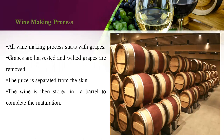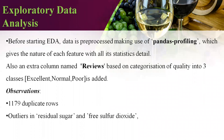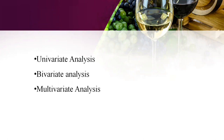All wine-making processes start with grapes. Grapes are harvested and wilted grapes are removed. The juice is separated from the skin, and add-ons like chloride, sulfates, etc. are added to the juice and stored in barrels. Once the maturation process is completed, the juice turns into wine. Before starting our EDA, data has to be pre-processed. Here we pre-process our data making use of the report given by pandas profiling, so that our data analysis would be more accurate. The analysis section is divided into three types: univariate, bivariate, and multivariate analysis.